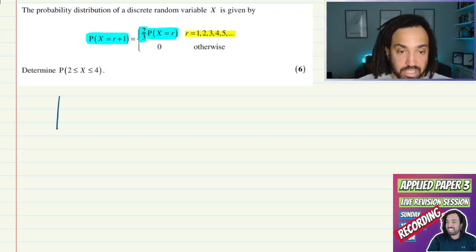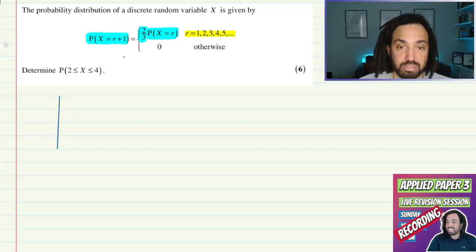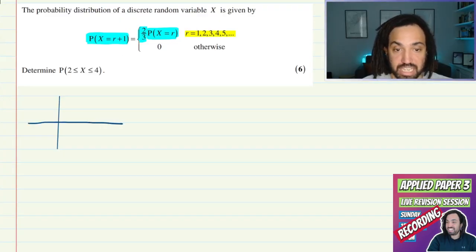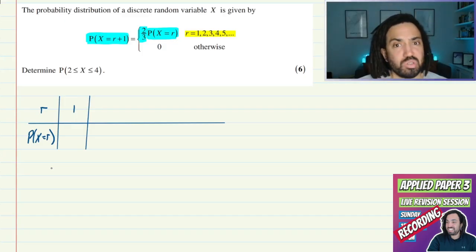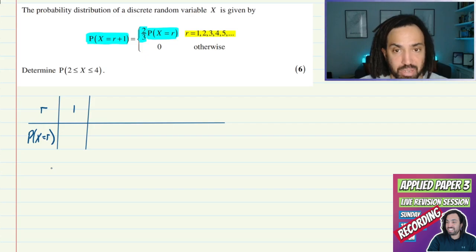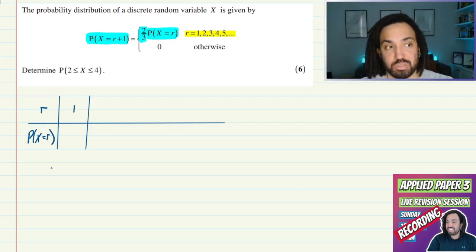Perhaps it'll be easier to understand rather than in a mass function like this as a distribution table that we're kind of a little bit more used to seeing. So we'll put r here and we'll say the probability that x equals r here. Now the first probability when r is equal to 1, well I'm not really sure what that is.